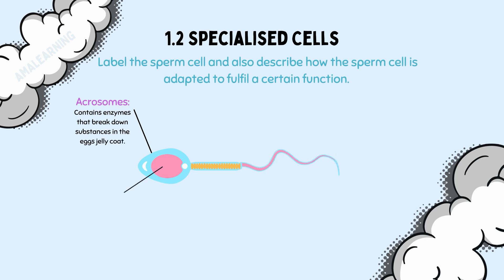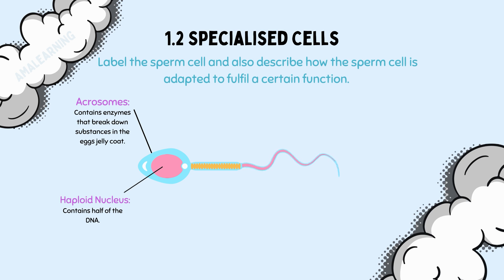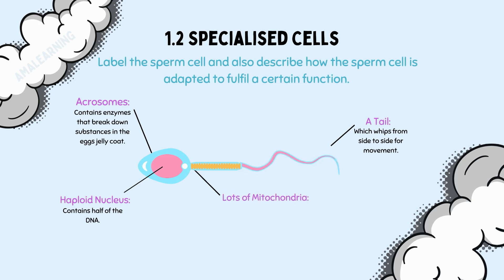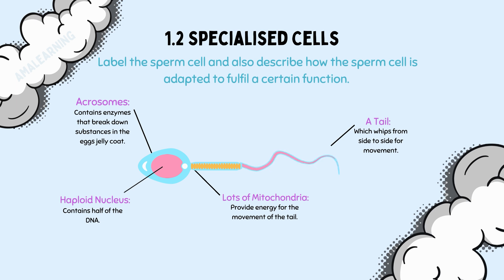The sperm cell also has a haploid nucleus, which contains half of the DNA. When the sperm cell finally enters the egg cell, the sperm cell's haploid nucleus will combine with the haploid nucleus of the egg cell to make a diploid cell. The sperm cell has a tail which helps it to swim and to reach the egg cell. Finally, the sperm cell has lots of mitochondria, just here in the neck of the sperm cell. Mitochondria are vital as they provide energy for the movement of the tail. A sperm cell that has more mitochondria will be able to swim for longer and faster — ultimately it's a race, and the first sperm cell to enter the egg cell is the winner.